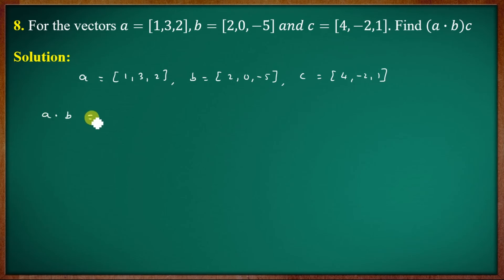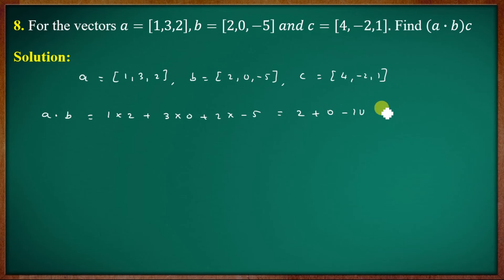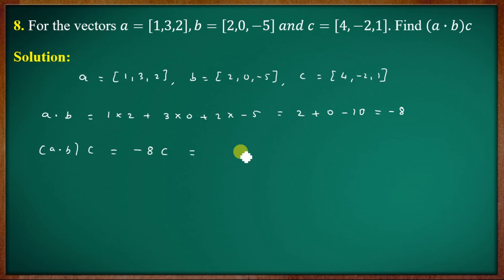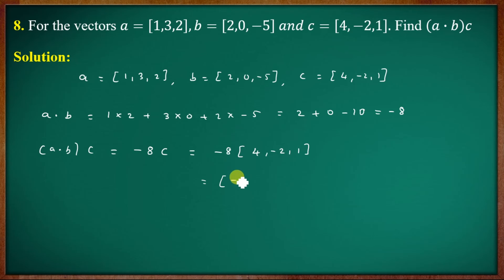So A·B = -8. Then A·B times C = -8 × (4, -2, 1) = (-32, 16, -8). This is the resulting vector.